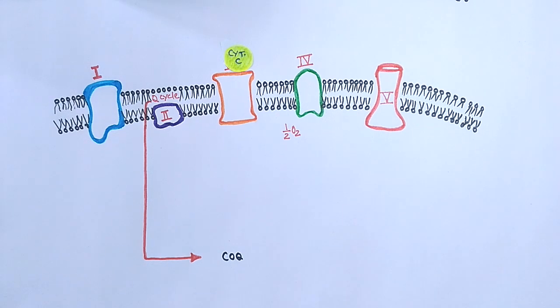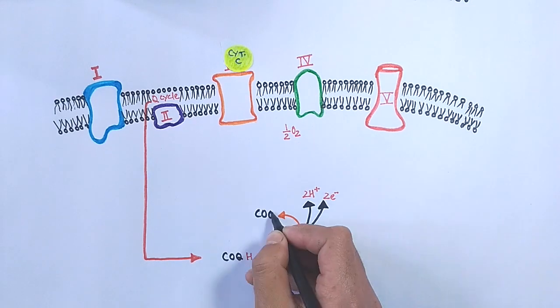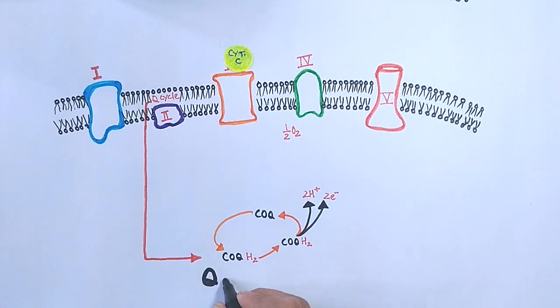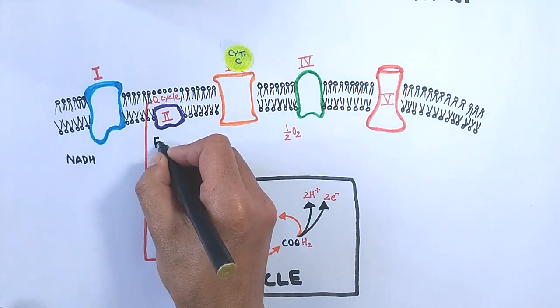The Q cycle are a series of reactions that describe how the sequential oxidation and reduction of coenzyme Q10 occurs between the ubiquinone form and ubiquinol forms. Now let's see where the chain starts.